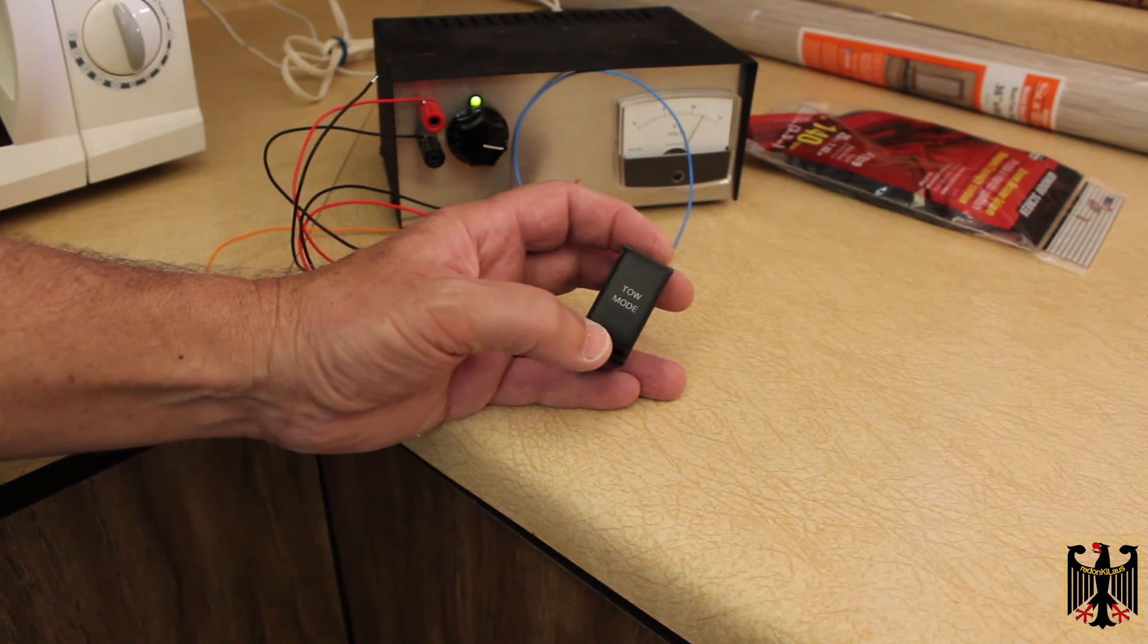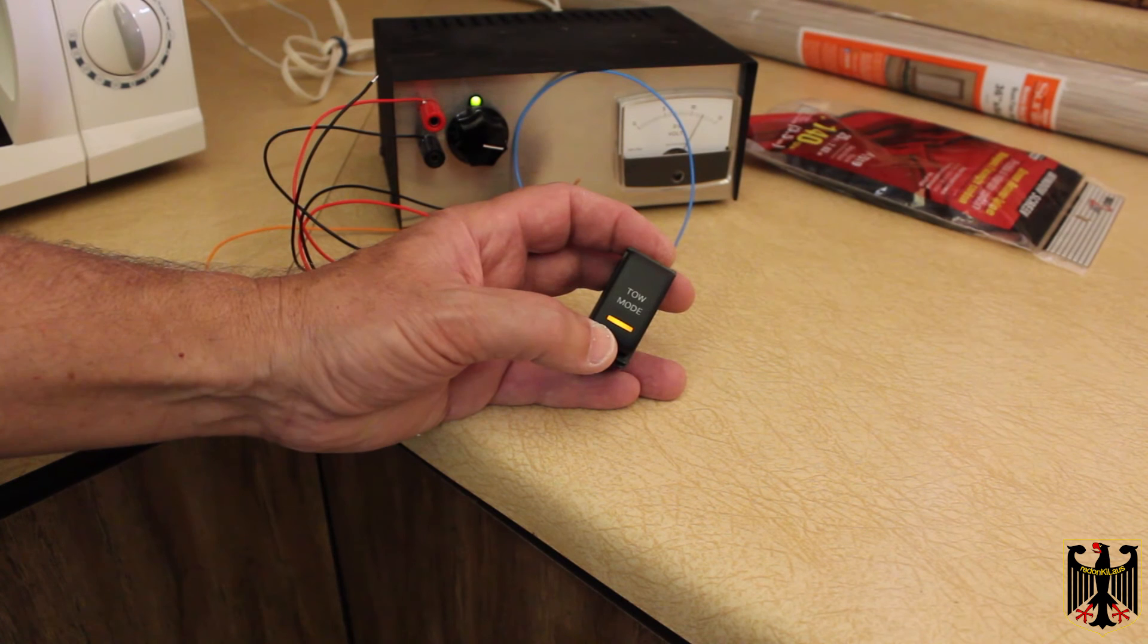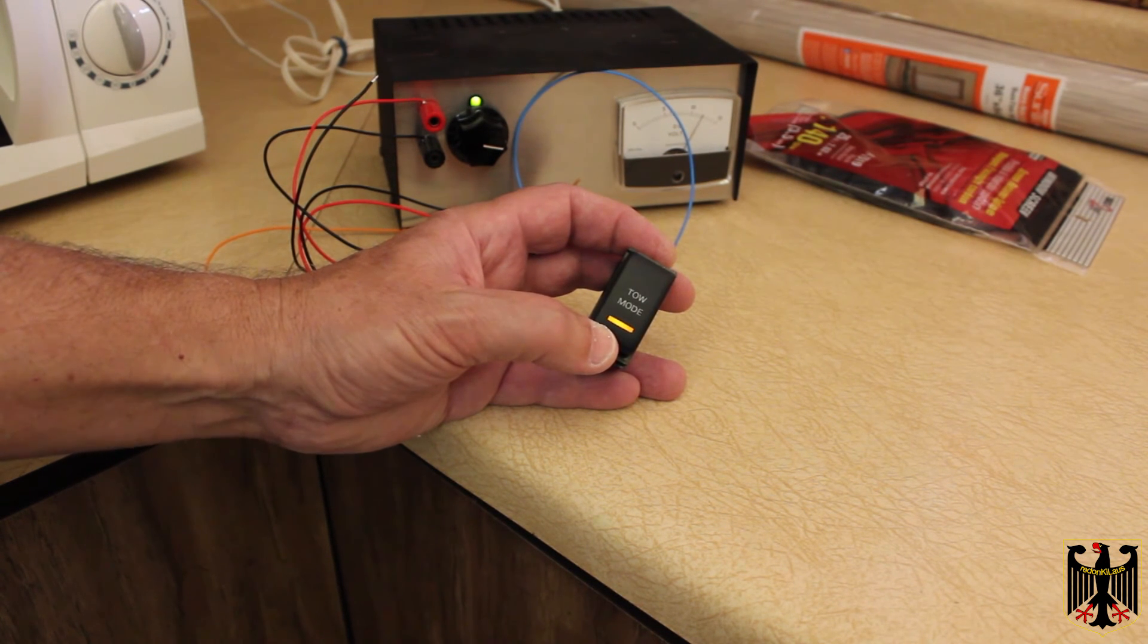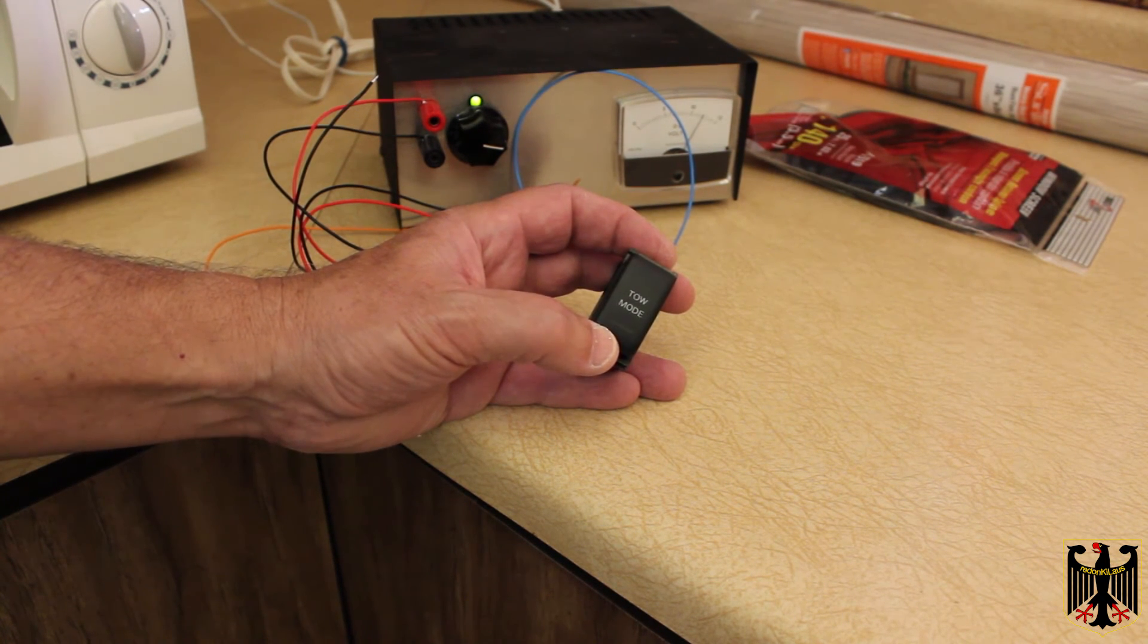So this should switch the maps on the Stillen from MAP A, or in this case B, back to A. So we're going to put it on the vehicle and just temporarily stick it on there and see how it works. So I'll be back in a minute.